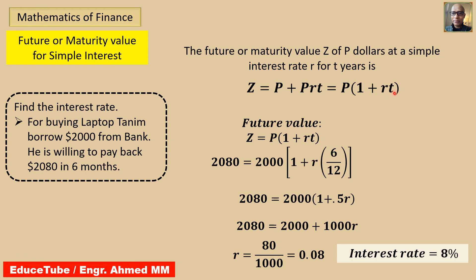In this example, the same equation is used, but the difference is that we are asked to find the interest rate. We put the given value for Z and P into the formula, and T is given as 6 months, so 6/12. From the formula, the right-hand side gives 0.5R, and solving we find R equals 0.08 in decimal. Converting to percentage, it will be 8%. Very simple.